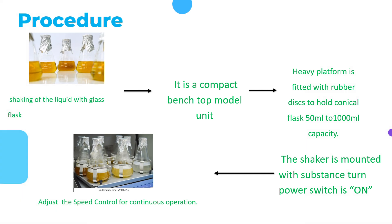Procedure of Rotary Flask Shaker. The shaker is used in various research laboratories for shaking liquid in glass flasks. It is a compact benchtop model unit with a heavy platform fitted with rubber discs to hold conical flasks from 15 ml to 1000 ml capacity. The shaker is mounted on ball bearings to give an orbital circular motion to the flask. The diameter of the orbital is approximately two inches. The entire assembly is mounted in a rental casing which houses a motor coupled by means of a belt with pinch and pulleys. After the shaker is mounted with the substance, turn the power switch on and adjust the speed control for continuous operation.